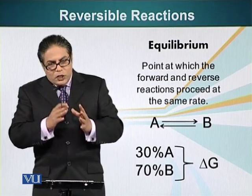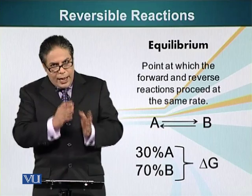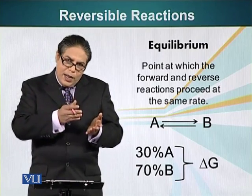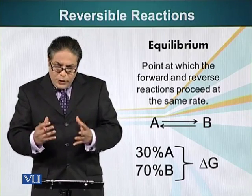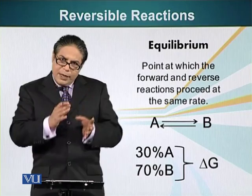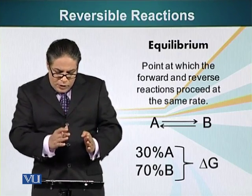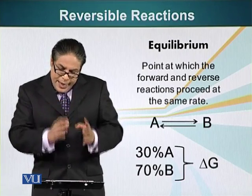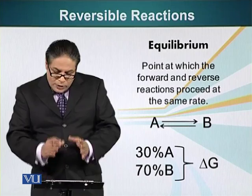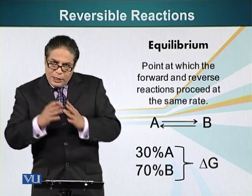At equilibrium — the point at which the concentrations of A and B are constant — the number of A molecules converting into B is the same as B molecules converting back into A. In our case, at equilibrium, 30 percent of the molecules are A and 70 percent are B. So the conversion of A into B is exothermic with a negative delta G. Because energy is being released, A is present in a smaller amount compared to B.